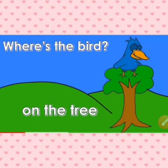Where is the bird? The bird sits on the tree. On — tree ke upar baitha hai. On hota hai oopar — touch karke baitha hai na woh. Where is the bird? On the tree.